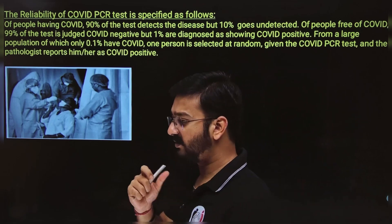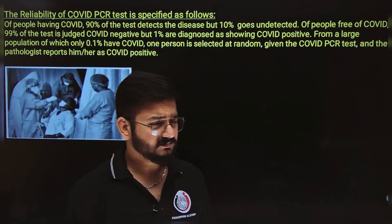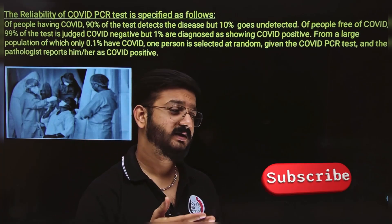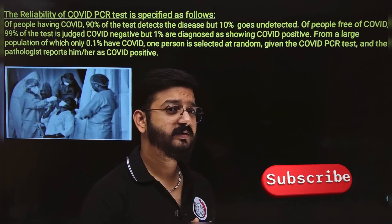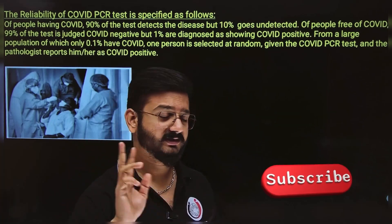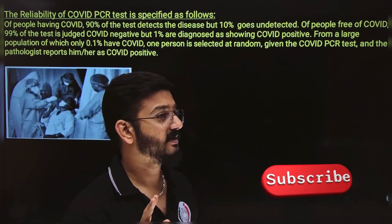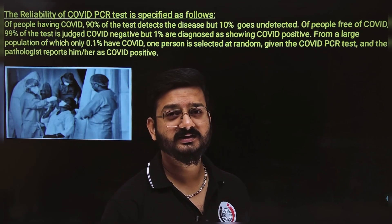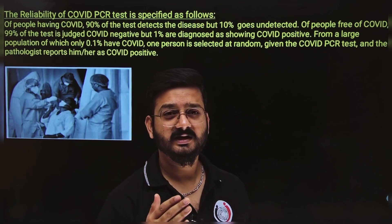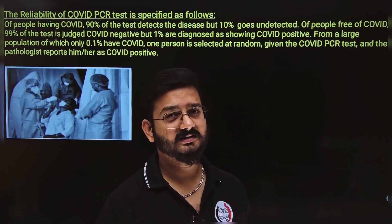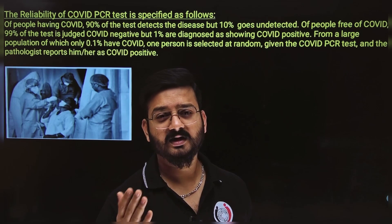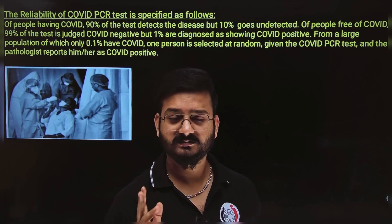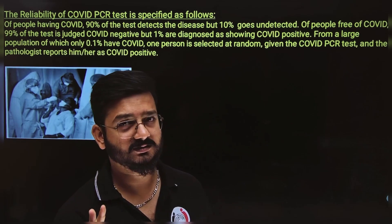If I simplify this question, they are telling that there are few people who have COVID and a few people who don't have COVID. Then testing is done. In some situations, tests are giving you the correct result. In some tests, you are getting the wrong results. These are the possible scenarios.